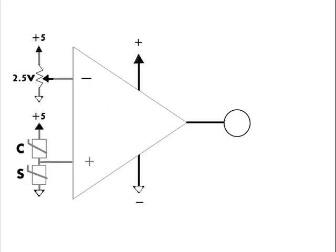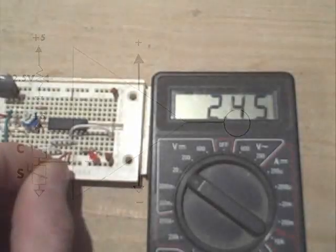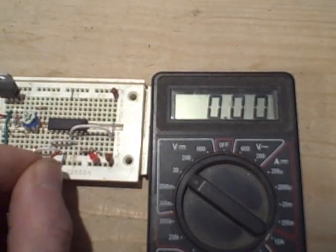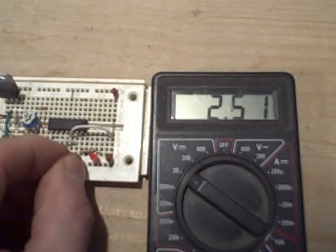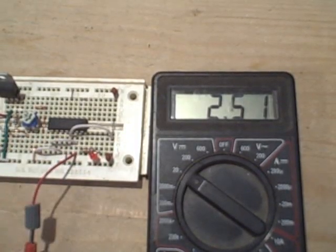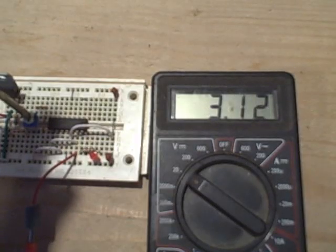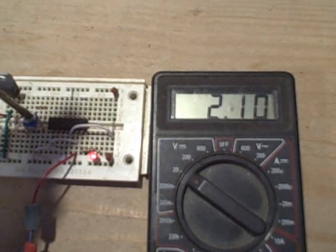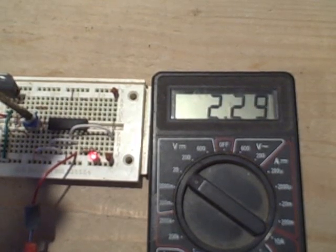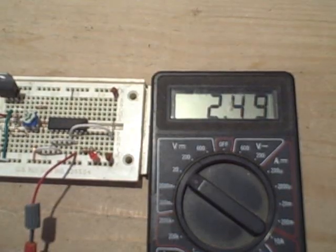This op-amp is used as a comparator, so the slightest variation from 2.5 volts drives the output either high or low. The first thing we want to do is set the threshold voltage. I'm going to move this probe over to the negative input of the op-amp. This is a quad op-amp, but we're only going to be using one of the op-amps. You can see right now the voltage is set at 2.5, but that can be adjusted — now it's 3.13, 2.10.